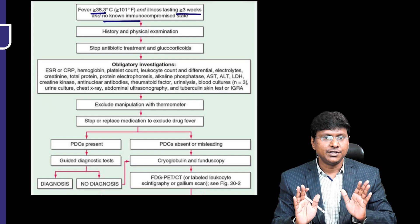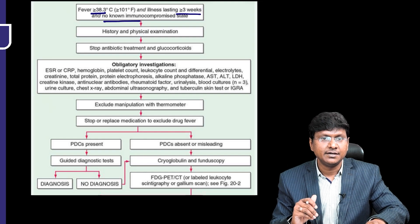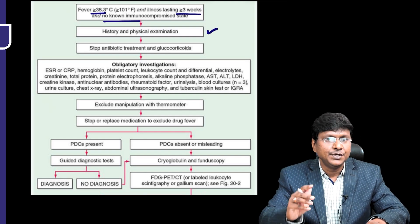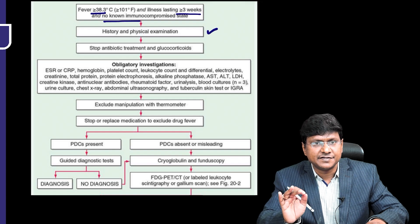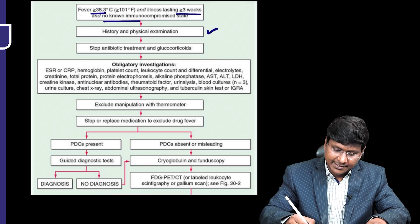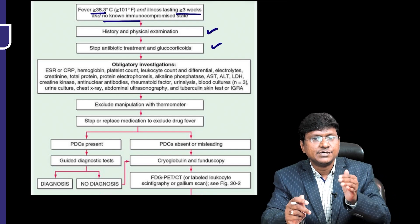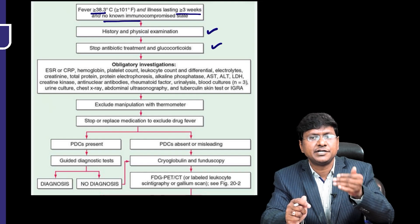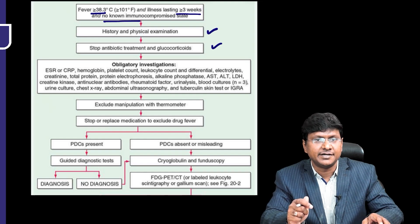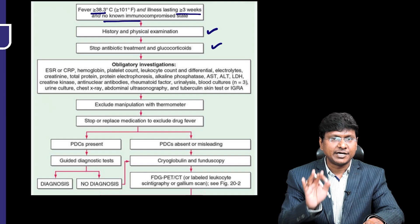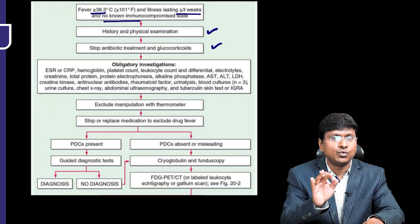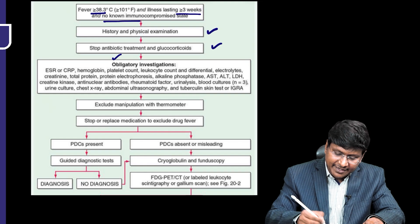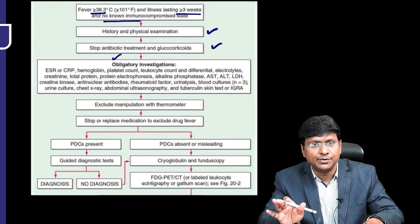How is the workup that you need to do? Step-by-step explanation: for the initial evaluation, you need to conduct a detailed history and physical examination. Next, stop antibiotics and glucocorticoids as they mask the infection and inflammatory conditions. Whenever you are working up a patient with FUO, stop antibiotics and glucocorticoids. What are the obligatory investigations that you should definitely do?